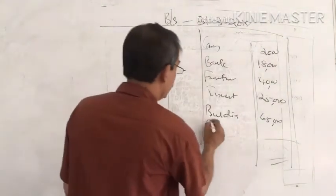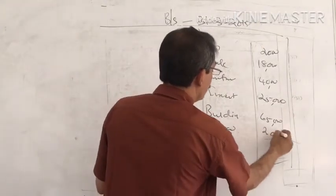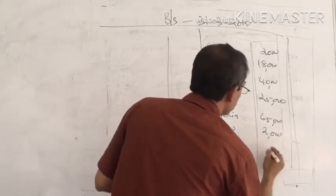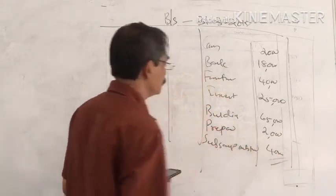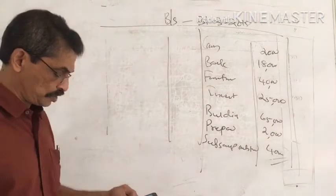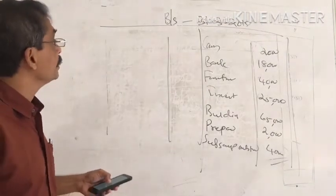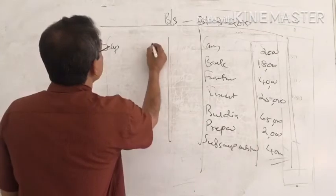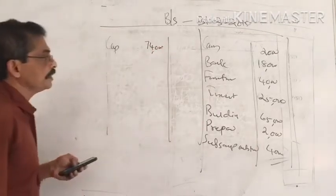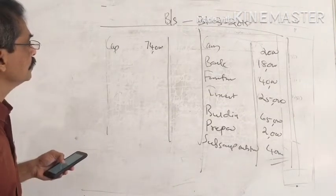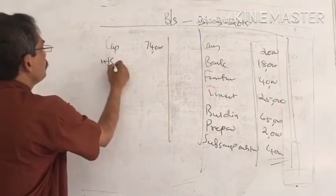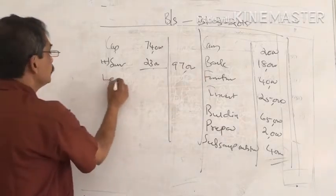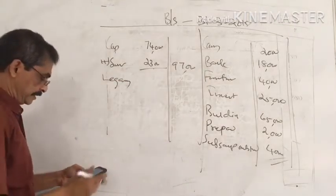On the closing balance sheet, there is prepaid insurance as an asset, but there is no subscription outstanding on the liability side in this case. The capital fund is Rs. 74,000. Plus the surplus of Rs. 23,000. The legacy of Rs. 25,000 is also shown.